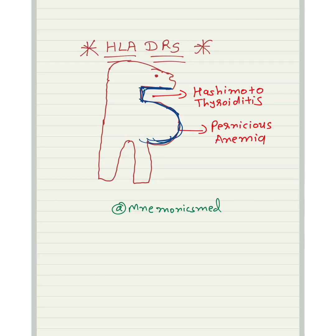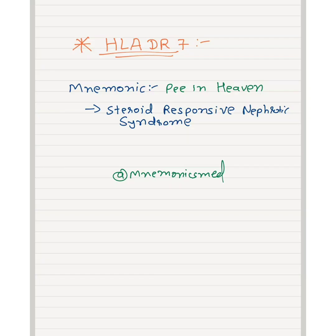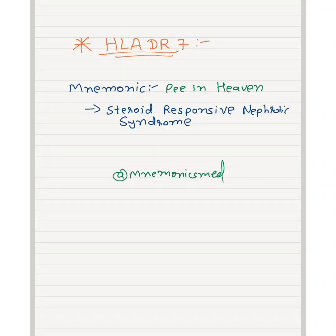HLA-DR7 mnemonic is 'P in heaven.' It is for steroid-responsive nephrotic syndrome. So you can easily remember via this mnemonic HLA-DR7: P in heaven.